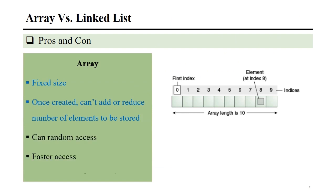Next, we will compare the processing of arrays and linked lists. In an array, it is a data structure that can store many elements, but the number of elements is fixed when we create it. This means that if we create an array for storing 10 items, we cannot store more than that. After we create an array, we cannot add or delete elements. To access an element in the array, we use an index. For example, to access the element at slot number 9, we use index number 8, because array indexing starts from 0.